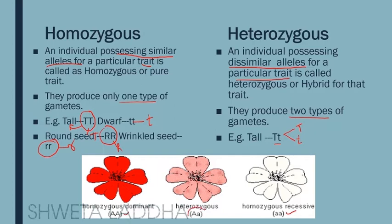Heterozygous is shown with one capital and one small letter, so dissimilar alleles are present. I hope you have understood this.